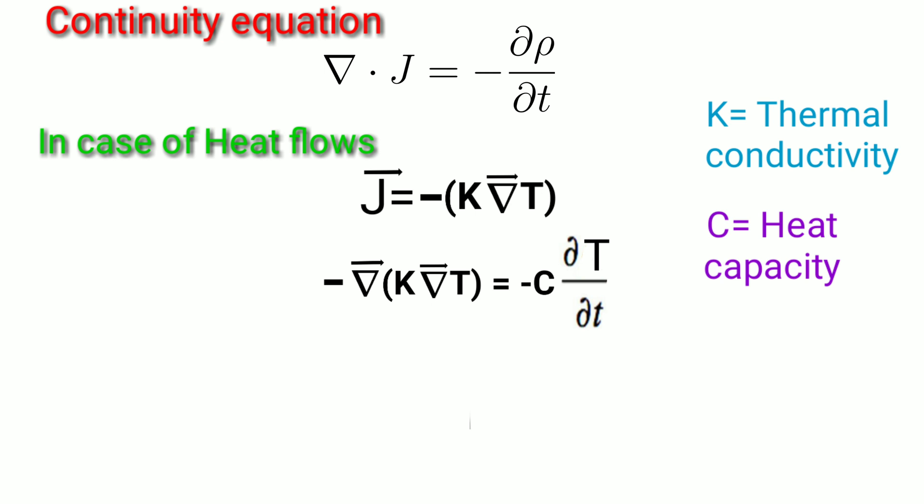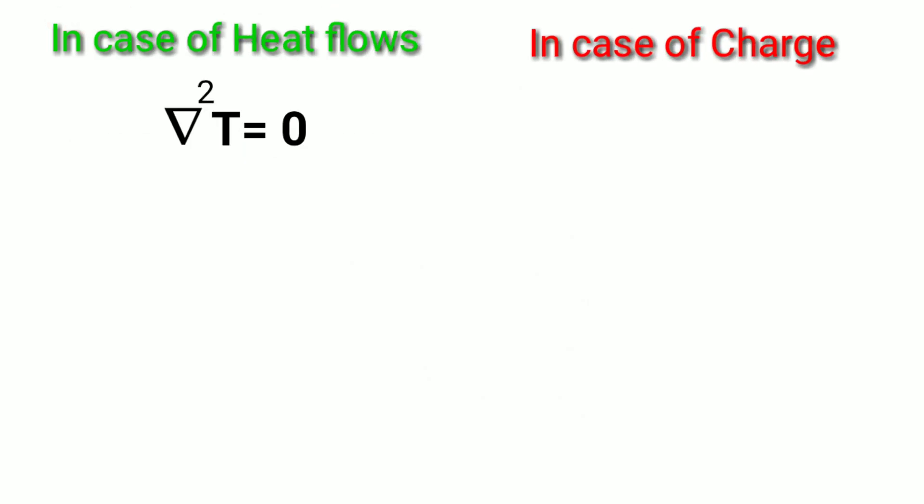k del square T equals c time derivative of temperature. For steady state, the time derivative of temperature is zero. Then the equation becomes del square T equals zero.